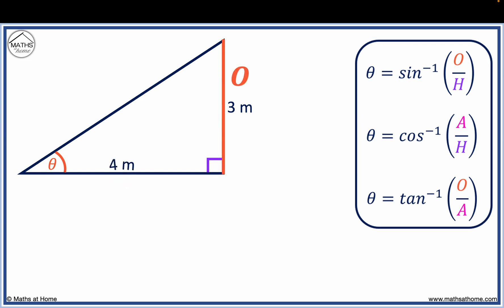The side of four meters is between theta and the right angle, so it is the adjacent, which we label as A. We only label the sides that we know. We do not know the length of the hypotenuse, so we don't label it.